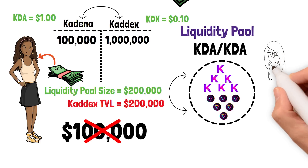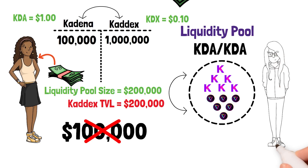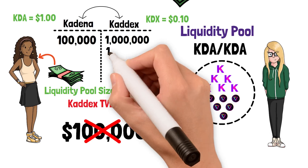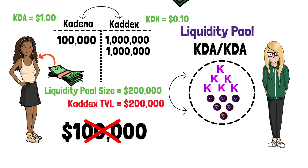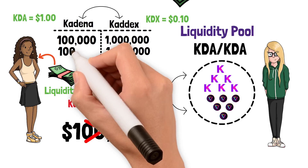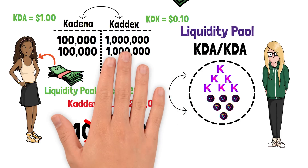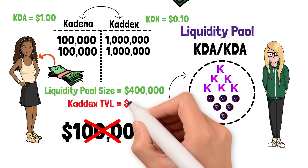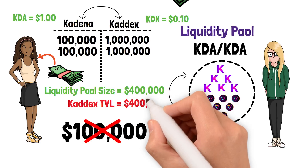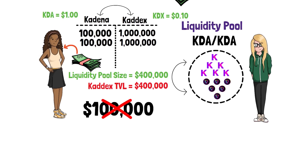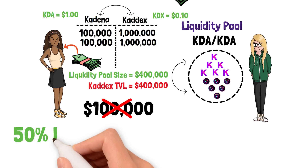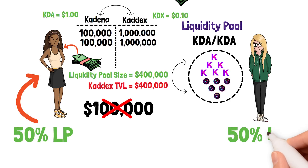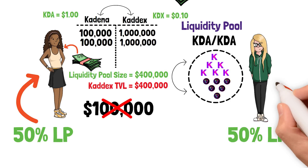Now let's say Bri's best friend Ashley also wanted to be a liquidity provider and brought over the same amount — $100,000 in KDX and $100,000 in KDA. Ashley adds liquidity just like Bri did, and the size of the liquidity pool doubles — from $200,000 to $400,000. This means Bri now owns 50% of the liquidity pool and Ashley owns 50%.